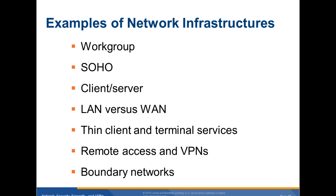An example of workstation infrastructures. A workgroup is usually small, has limited uses, no central authority, and the security policy is managed individually. SOHO — small office, home office — is small with some level of central management, but not scalable. Client-server networks have shared resources, larger networks, complexity, and centralized control. Other types include LAN versus wide area network, thin client and terminal services, remote access and virtual private networks, and boundary networks.